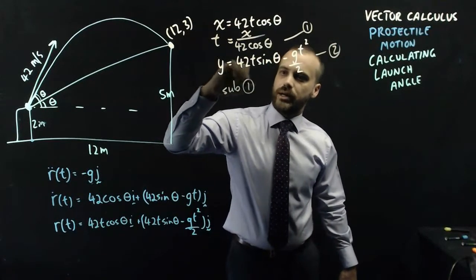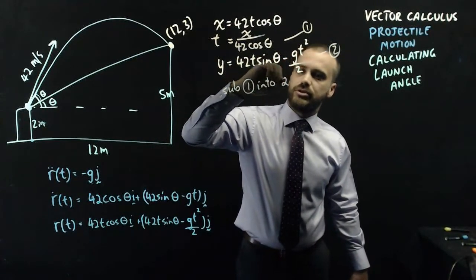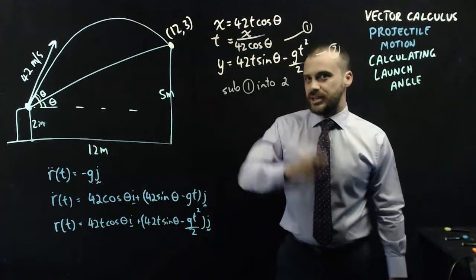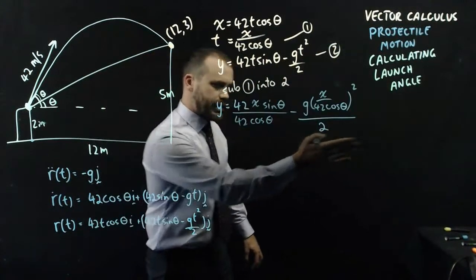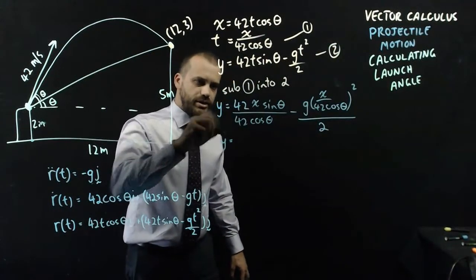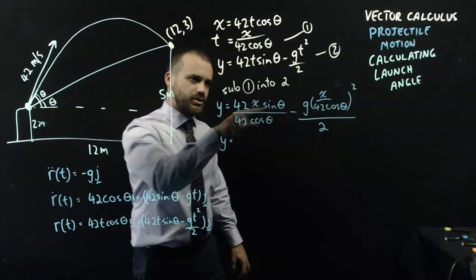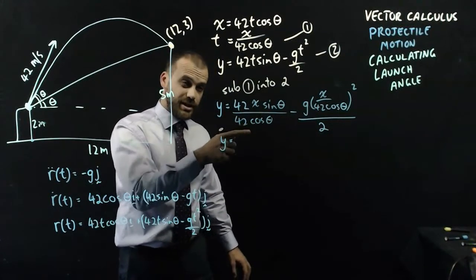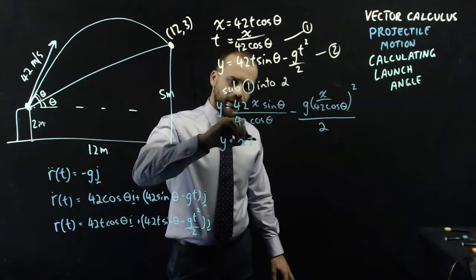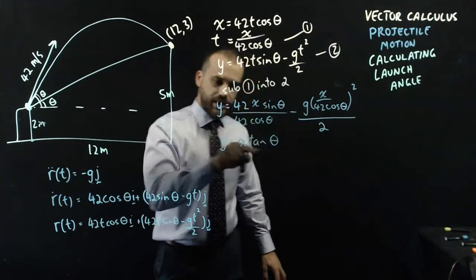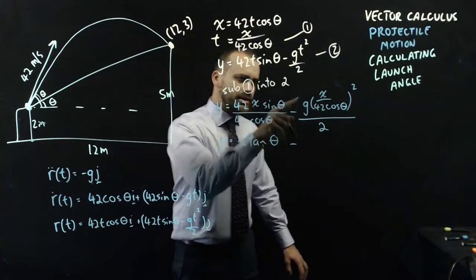And now I'm going to sub 1 into 2 for t. Now, when I do that, I'll get this neat little thing here. And you can see the 42s are going to cancel out. Sin theta over cos theta is tan theta. So I get this neat little x tan theta.